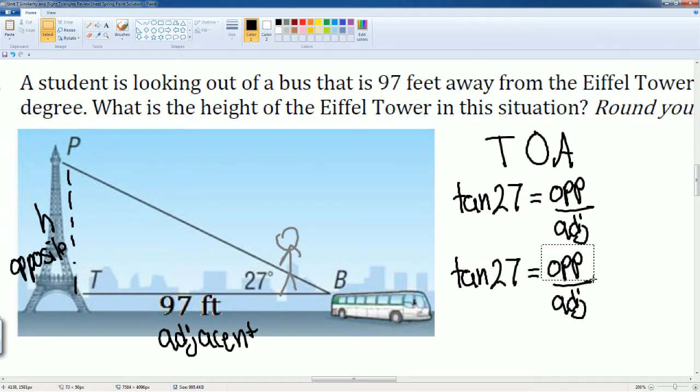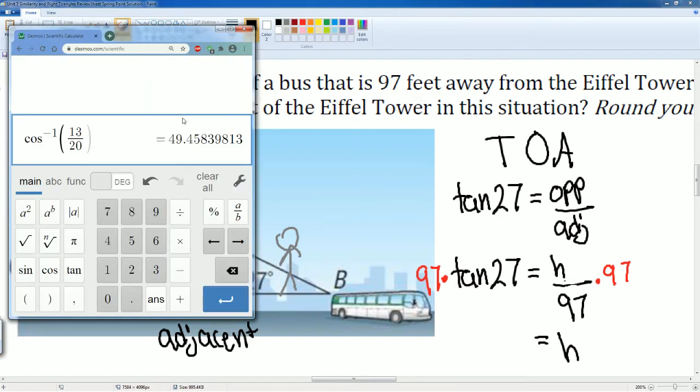The opposite is the value of H, and your adjacent is 97. To get H, we multiply 97 to both sides, so this whole thing is equal to H. So what is 97 tan 27 degrees? We plug in 97, hit tan 27, that...